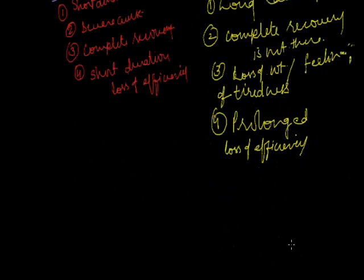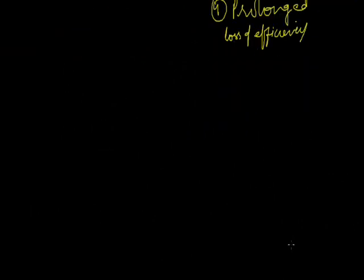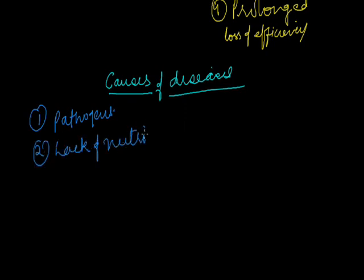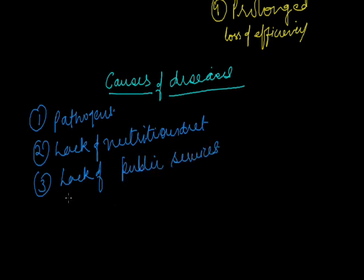These are the differences between acute and chronic diseases. Now, what are the various causes of diseases? The causes can be categorized as follows: first, pathogens — these are microorganisms like bacteria, virus, fungus, etc. which cause diseases and are transferred to human beings through air, contaminated food, water, soil, etc. Second is lack of nutritious diet, which makes a person unhealthy and susceptible to various diseases.